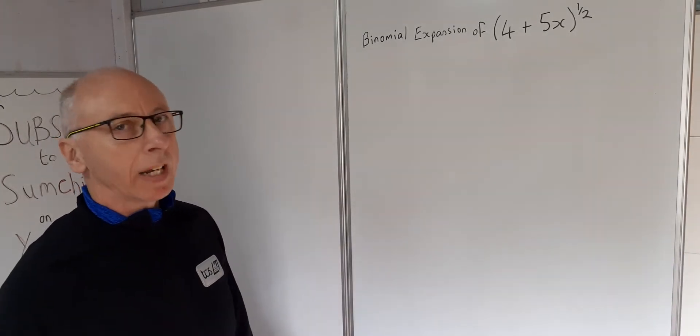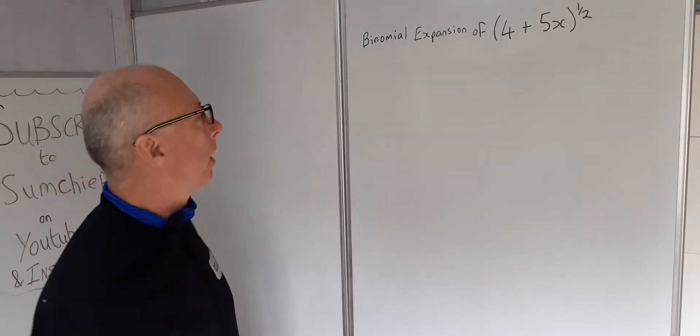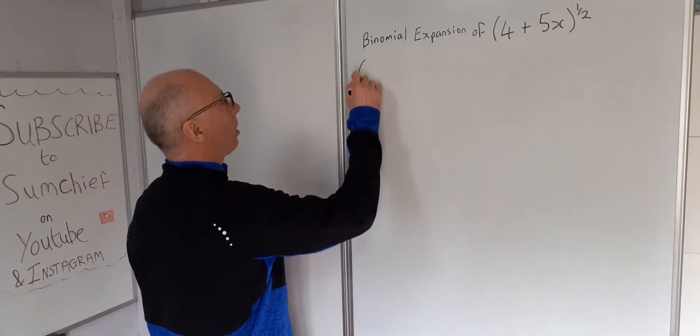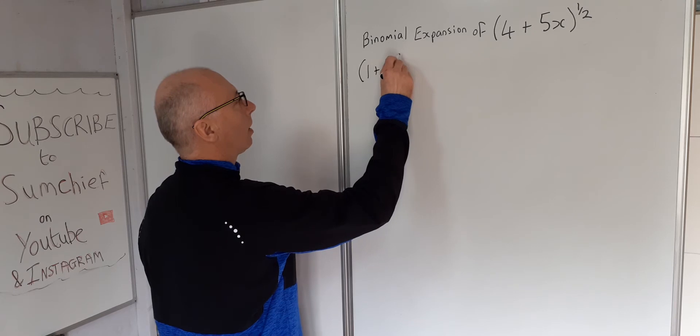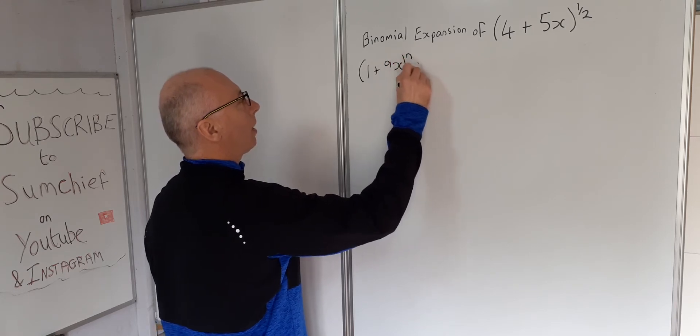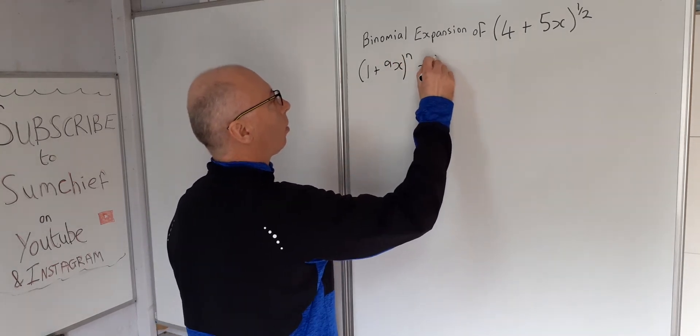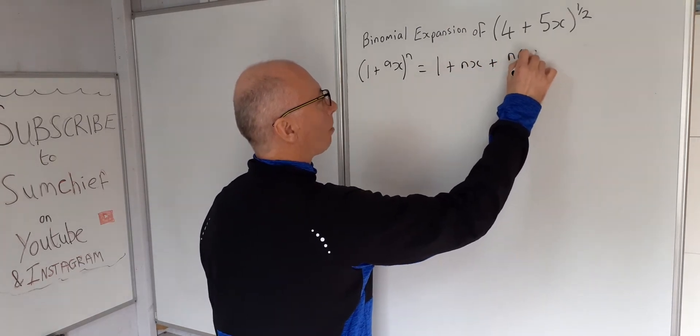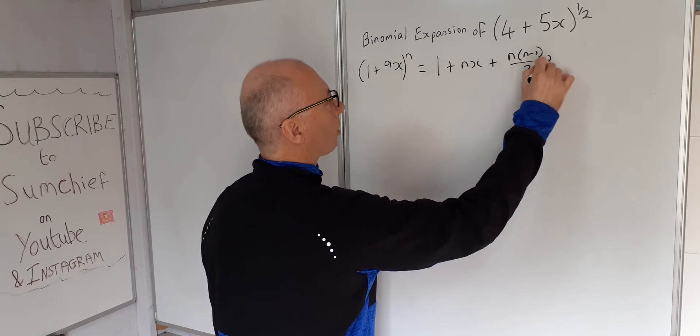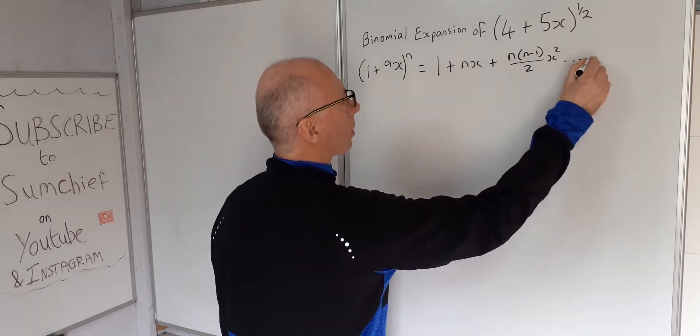So first of all we write down the binomial expansion formula. Where that is 1 plus ax to the power of n equals 1 plus nx plus n times n minus 1 over 2 x squared and so on.